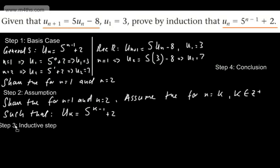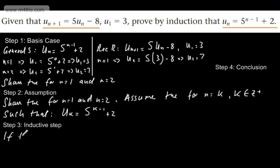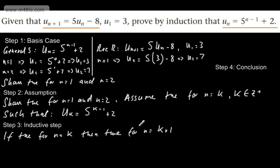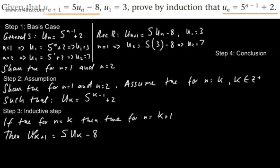We now come to the inductive step. If this is true for n equal to k, it will be true for the next positive integer value k plus 1. If true for n equals k, then true for n equals k plus 1. So the next term in the sequence, u_{k+1}, will be 5u_k minus 8, taken from the recurrence relation.